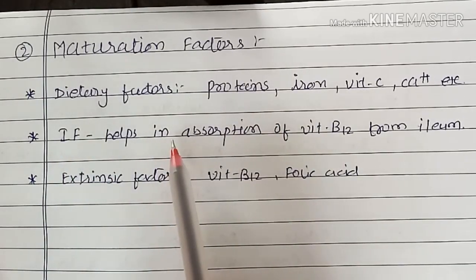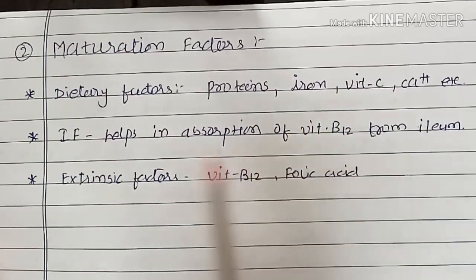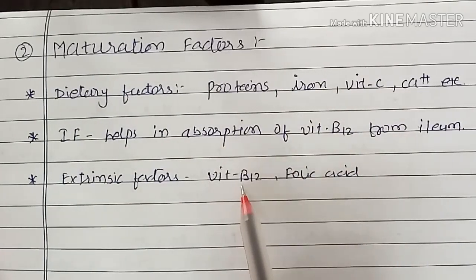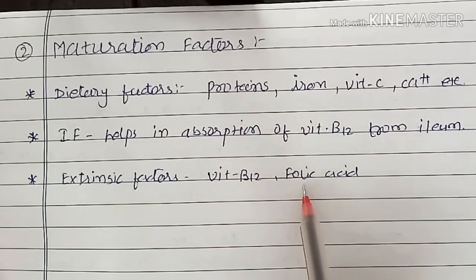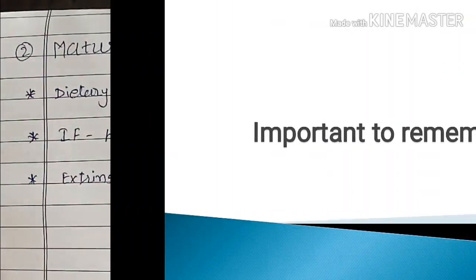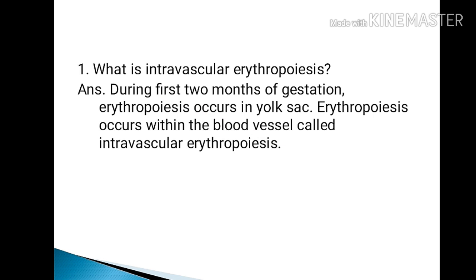Different maturation factors like dietary factors — proteins, iron, vitamin C, calcium, etc. — are required for hemoglobin synthesis. Intrinsic factor helps in absorption of vitamin B12 from the ileum, and extrinsic factors like vitamin B12 and folic acid are required for erythropoiesis.